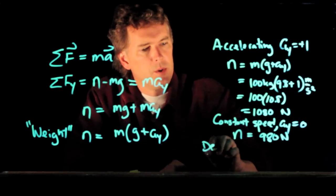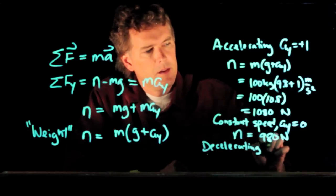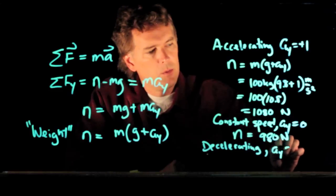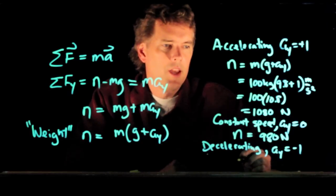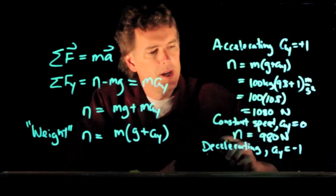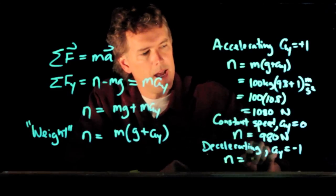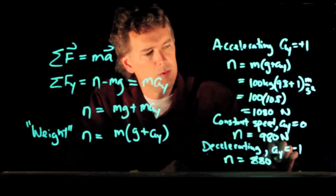And if we go to the case where you are decelerating with AY equals minus one meter per second squared, then you're going to subtract one from 9.8, which is 8.8 times 100. And we end up with N is equal to 880 Newtons.